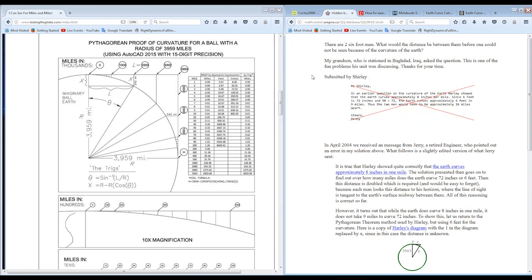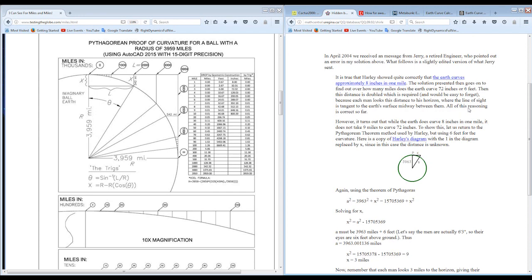There's an interesting question posed here at the top. There are two 6-foot men. What would the distance be between them before one could not be seen because of the curvature of the Earth? This person Shirley had a grandson who was stationed in Baghdad, Iraq, who was asking the question.